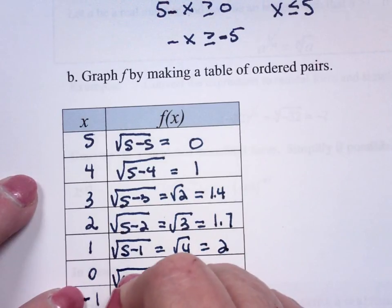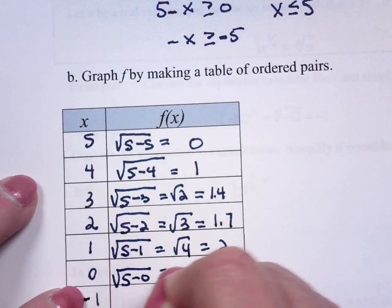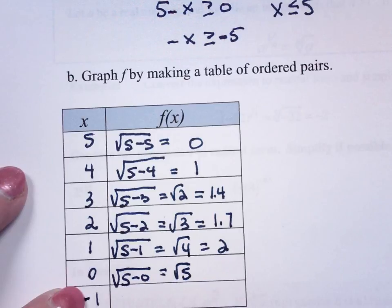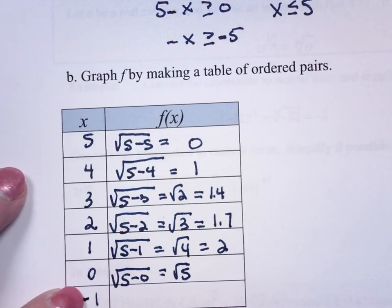Square root of 5 minus 0 is the square root of 5. And the square root of 5 is 2.2.